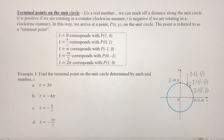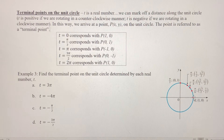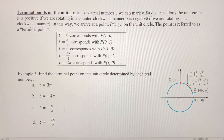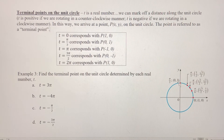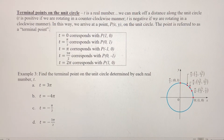So first off, let's talk about what T is. T is going to be a real number, and what it represents is a distance traveled along the unit circle. If we go in a counterclockwise fashion, this real number T is going to be positive. If we go in a clockwise fashion, that real number T is going to be negative.